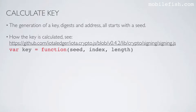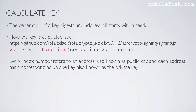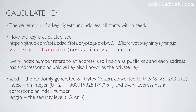How the key is calculated can be found via the referenced link and function. Every index number refers to an address, also known as a public key, and each address has a corresponding unique key, also known as the private key. The seed is a randomly generated 81 trits. The index number is an integer and every address has a corresponding index number. The length is the security level — you have security level 1, 2, or 3.